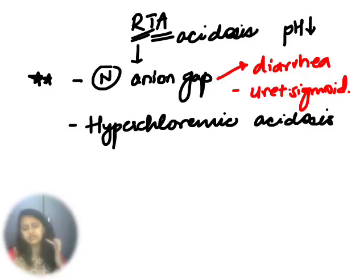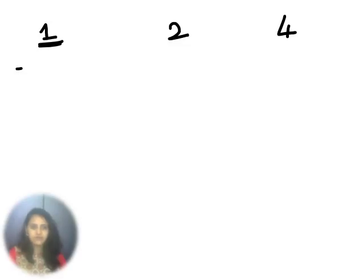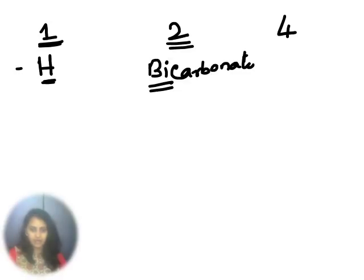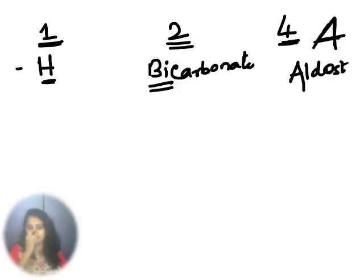The types of renal tubular acidosis are type 1 to type 4. Type 3 is uncommon and seen in children, so what we generally read is type 1, 2, and 4. How do we remember this? Type 1 — 1 means single letter, so the abnormality is in H. H is a single alphabet, so there is an abnormality in hydrogen ion excretion. Type 2 — 2 is bi, so there is an abnormality in bicarbonate. Type 4 — 4 resembles the alphabet A, so A stands for aldosterone, meaning there is some abnormality with aldosterone.